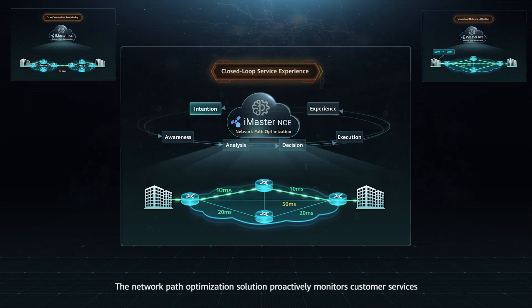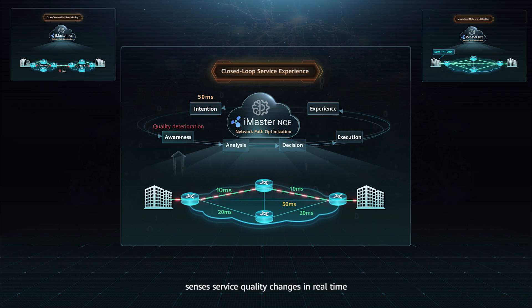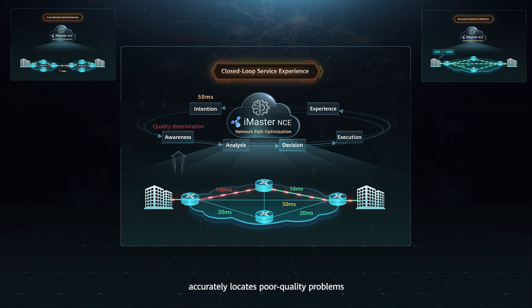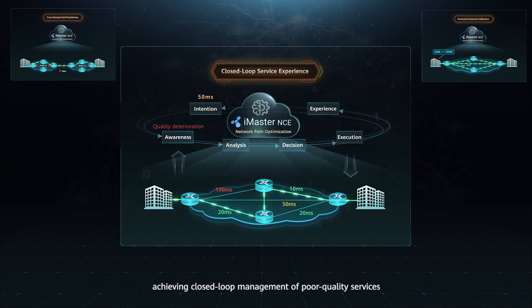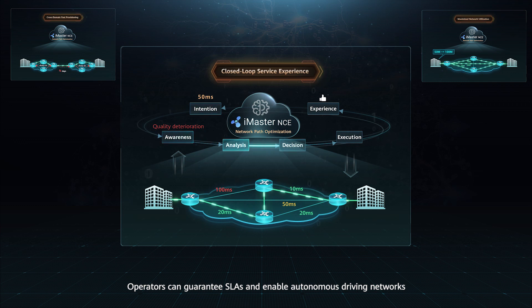The Network Path Optimization Solution proactively monitors customer services, senses service quality changes in real-time, identifies problems before they affect customers, accurately locates poor quality problems, and optimizes paths based on policies, achieving closed-loop management of poor quality services. Operators can guarantee SLAs and enable autonomous driving networks.